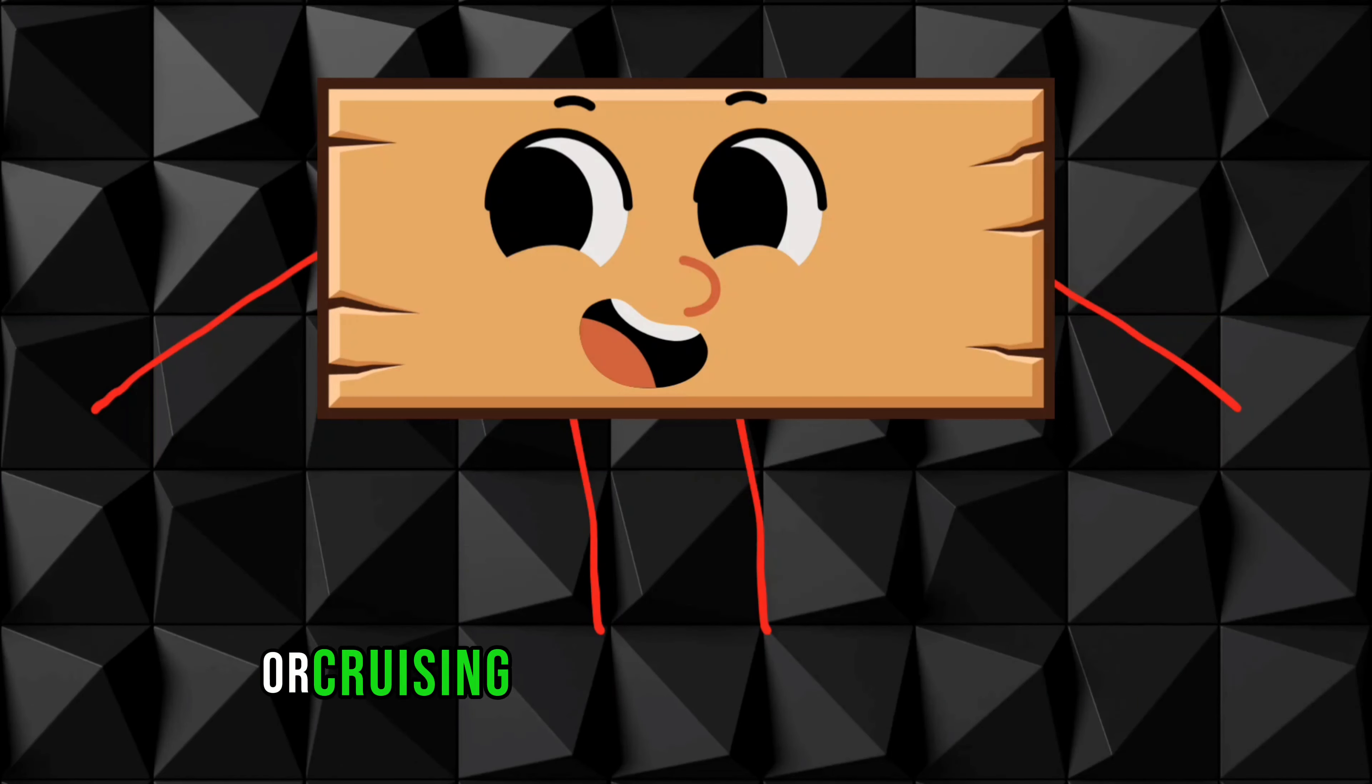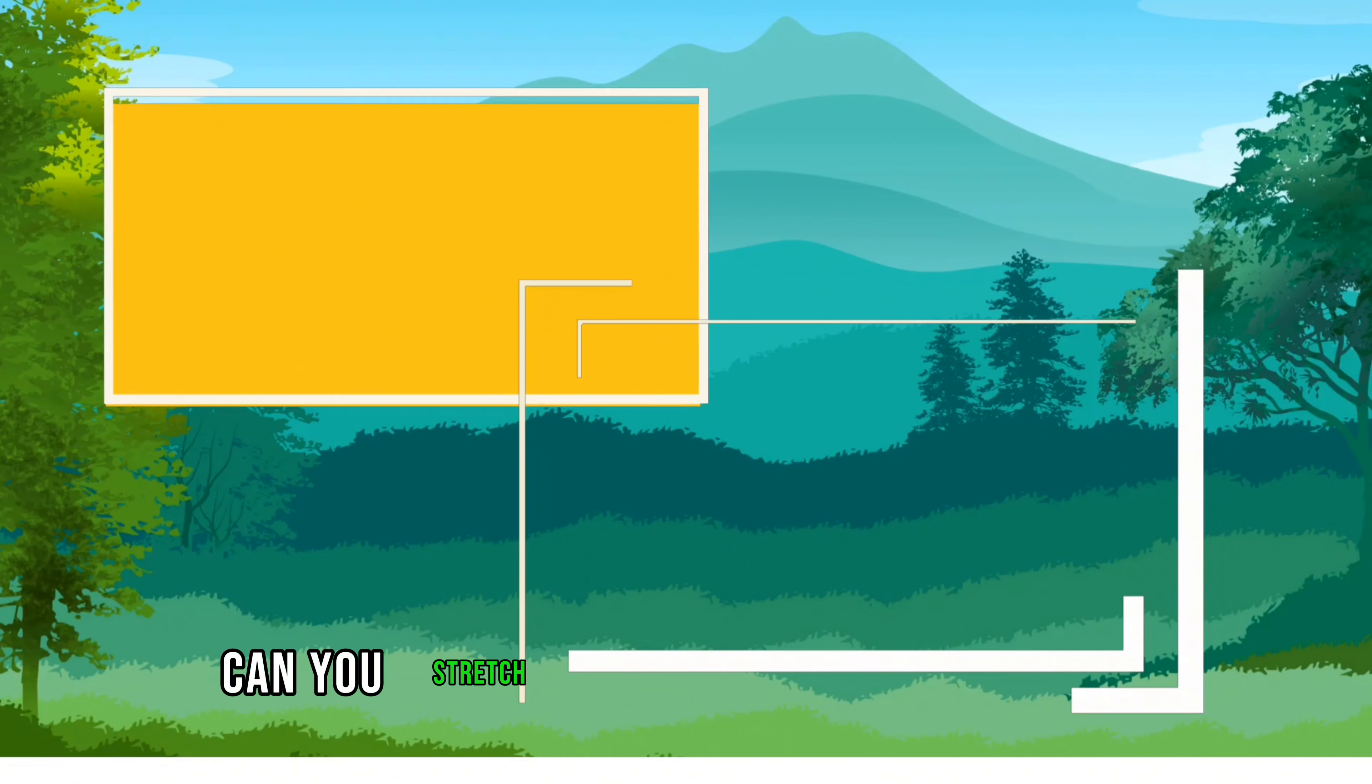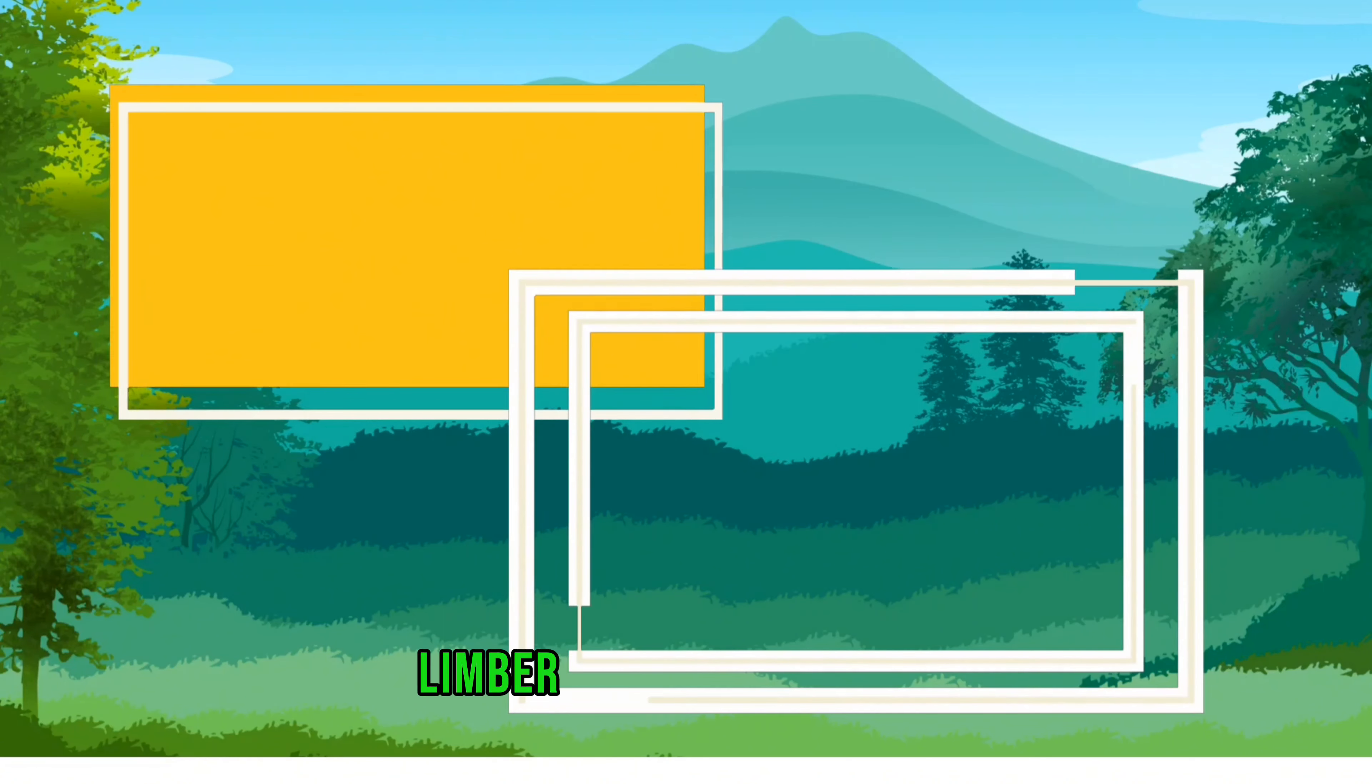Rectangle. Next, we're cruising down the rectangular river. Rectangles are like the long and lean athletes. Can you stretch and reach like a rectangle? Limber up.